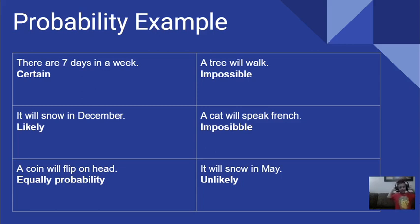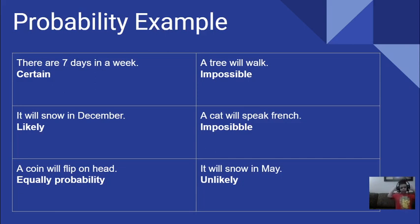A tree will walk — that is possible. It will snow in May — unlikely.